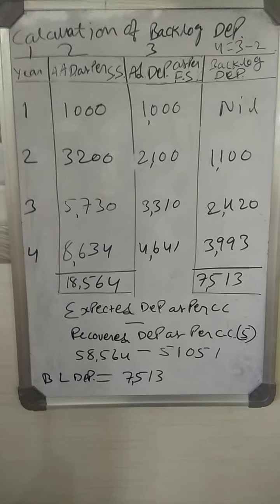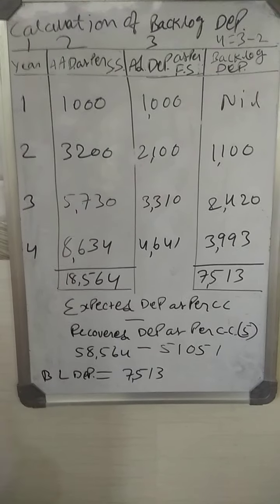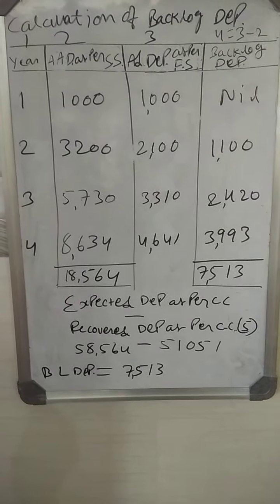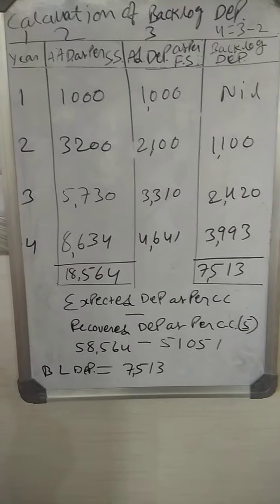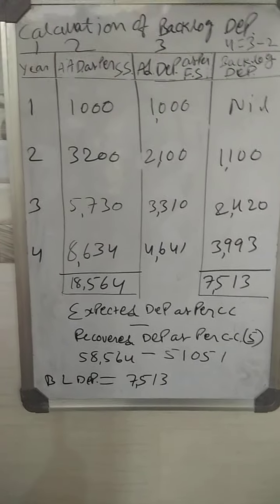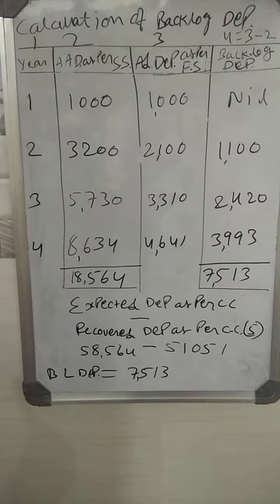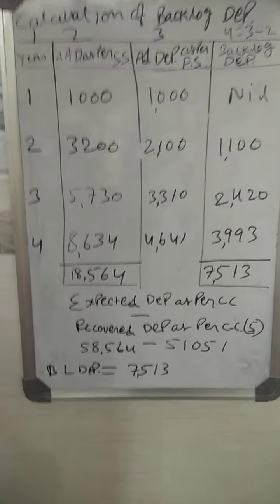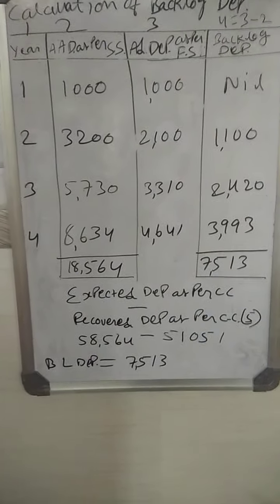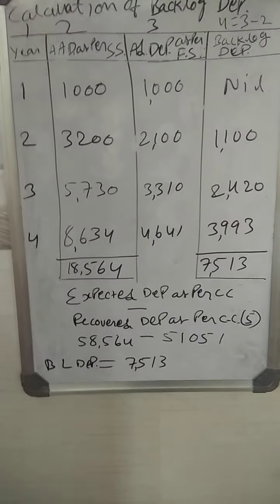Backlog depreciation is the fourth column. The fourth column (backlog depreciation) is equal to the third column minus the second column — that is, the third column amount less the second column amount.